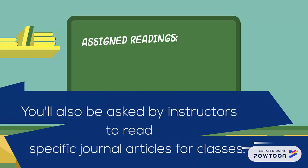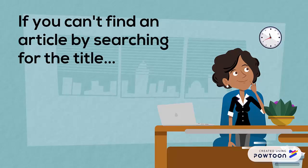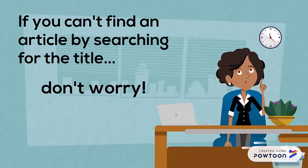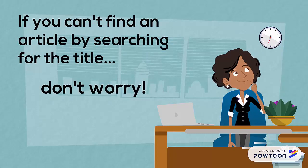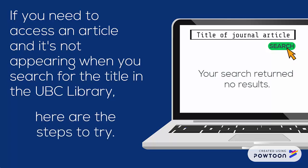You'll also be asked by instructors to find specific journal articles and read them for class. In most cases, when you're looking for a particular article, you'll be able to find it simply by typing the title of the article into the General Search tab on the UBC Library homepage. But on some occasions, finding a specific article won't be quite as simple. If you can't find it by searching for the title in the library's database, don't worry — there's a good chance you can access the article another way. So if you need to access a journal article and it isn't appearing when you search in the UBC Library, here are the steps to try.